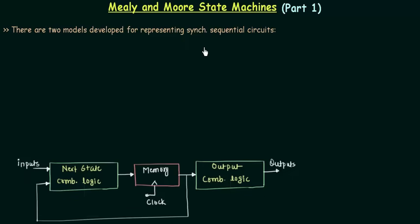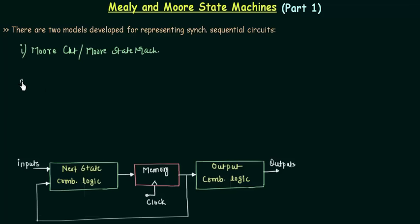There are two models developed for representing synchronous sequential circuits. In this presentation I will cover one model and in the next presentation we will talk about another one. The first one is the Moore circuit, also called as Moore State Machines, and the second one is the Mealy circuit, or the Mealy State Machine. These two models are very important when talking about state diagrams. The main question is: how are they different from each other?